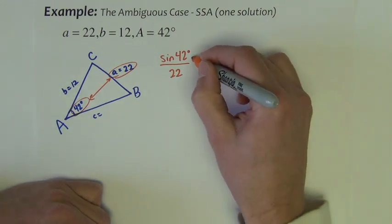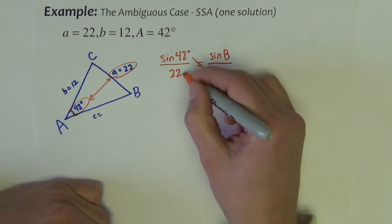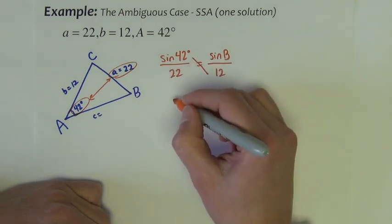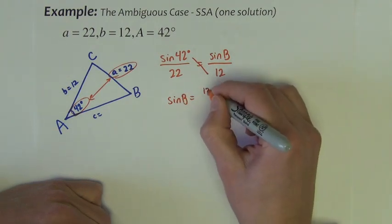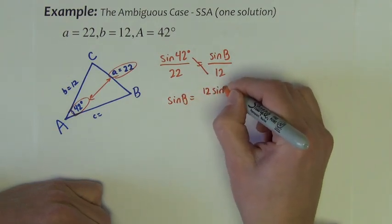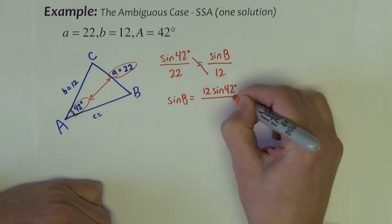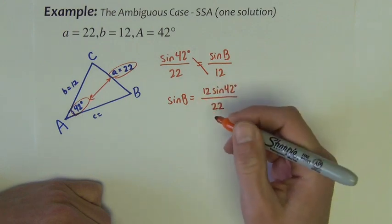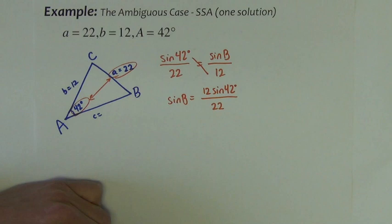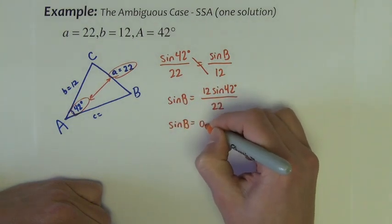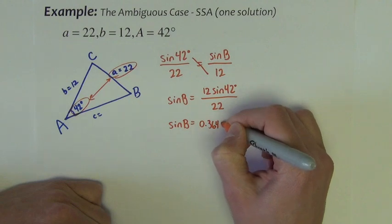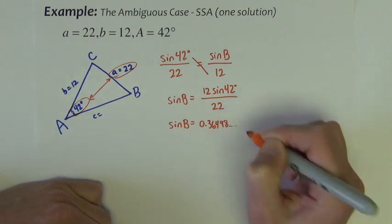So I cross multiply, and then I'll divide by the 22, so I'm going to have sine of angle B equals 12 sine of 42 divided by 22. So let's do that on the calculator. I get the sine of angle B to be 0.36498.